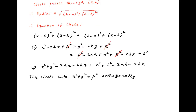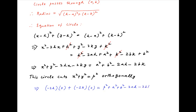The condition for two circles to cut orthogonally is that the product of the coefficients of x, which is minus 2h times 0, plus the product of the coefficients of y, which is minus 2k times 0, is equal to the sum of the constant terms on the right hand side, which is p squared plus a squared plus b squared minus 2ah minus 2bk.